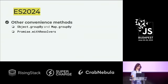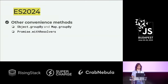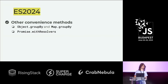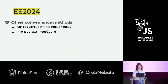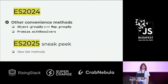We have Promise.withResolvers, which gives you a different way of creating promises that might be useful when interacting with non-promise-based APIs. It returns the promise and separately functions to resolve and reject it. That was it for ES2024.